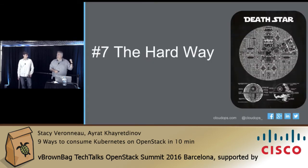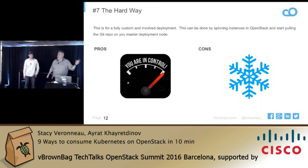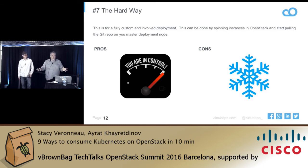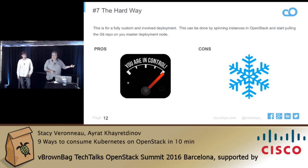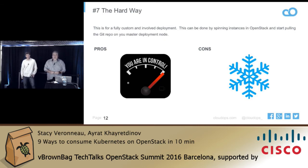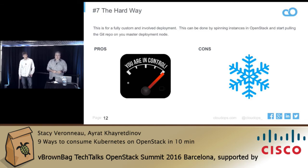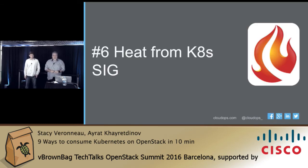Number seven is the hardware way — basically build your own Death Star. Go get it, build it, and use it. It's awesome if you want full control or if you just want to learn. You're in control, but the con is that you end up with a snowflake. We're Canadian so we're used to snowflakes, but that's not necessarily a good thing in IT — so we try to stay away from that.